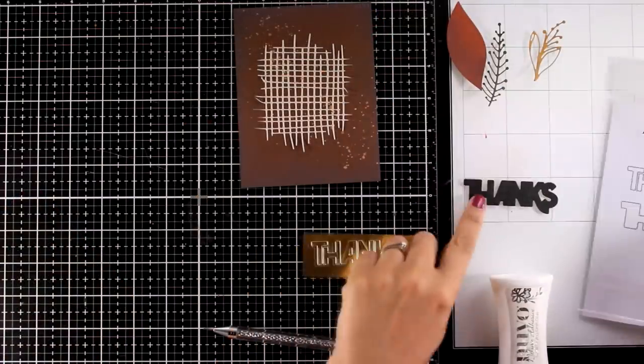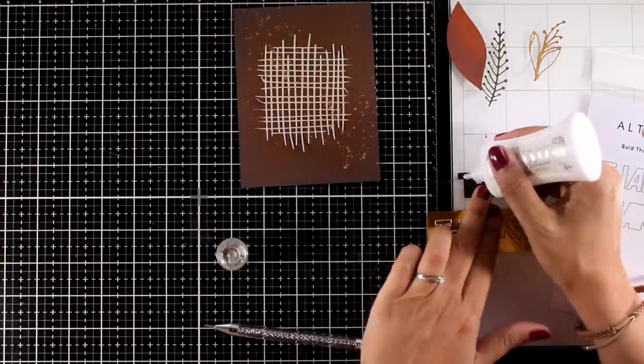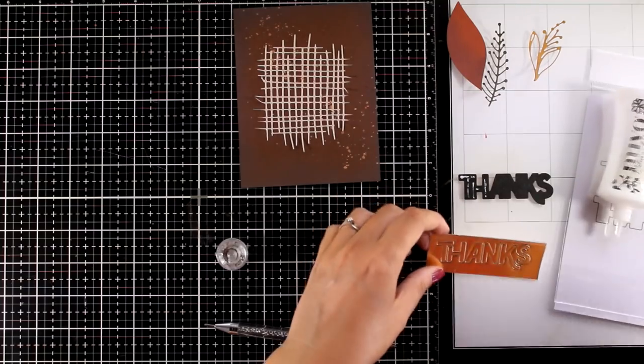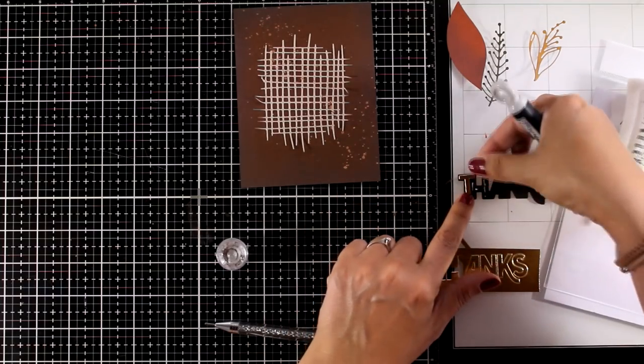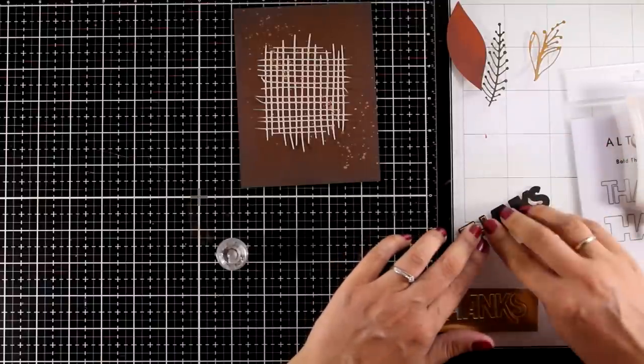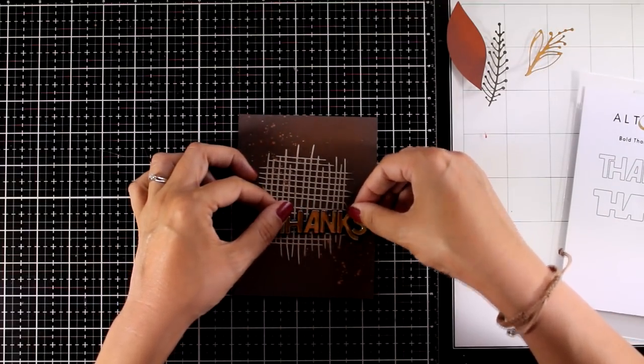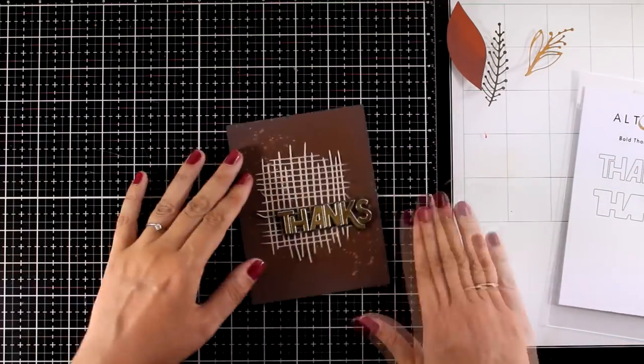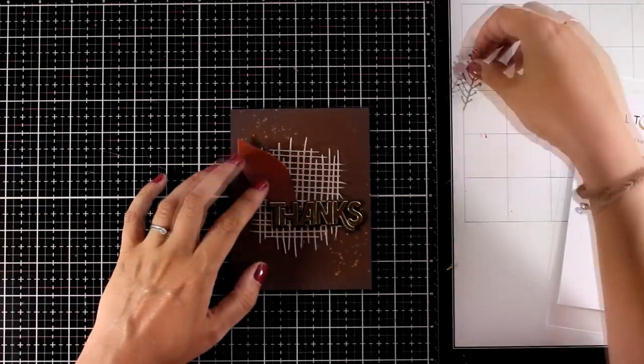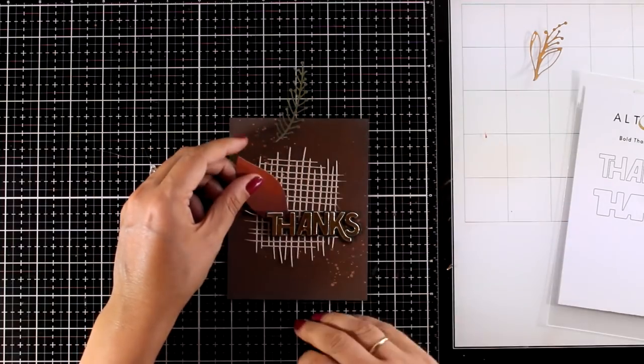Now I am going to work on my sentiment. For that I use the bold things die set. This gives you the dies to cut out the letters as well as the outline. So I cut out the outline from black cardstock and I'm sticking all the gold letters on top. I added tiny little pieces of foam tape at the back so that I can pop it on my card.